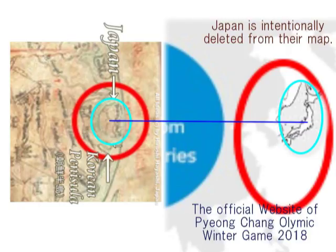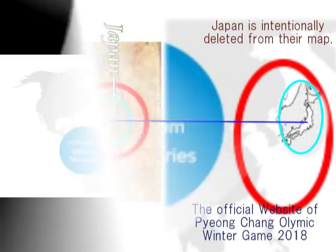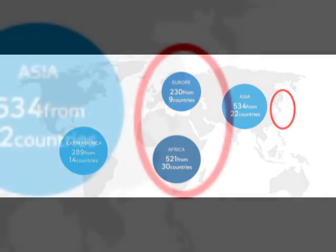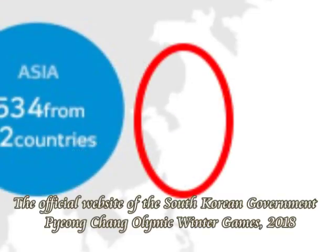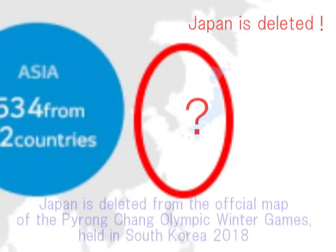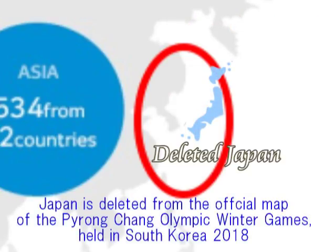2018年、Pyeongchang冬季オリンピックの韓国政府発行の公式ホームページから、日本が意図的に消されていました。その地図の中には日本はありませんでしたが、しかしその日本は旧約聖書の時代からその頂点に描かれていました。まさに、日のいずる国、日本でした。なぜ、韓国政府の公式ホームページにはその日本がないのか。一方、なぜ、古来より日本が地図の頂点に描かれていたのか。その理由は、皆さん、もうお分かりですね。